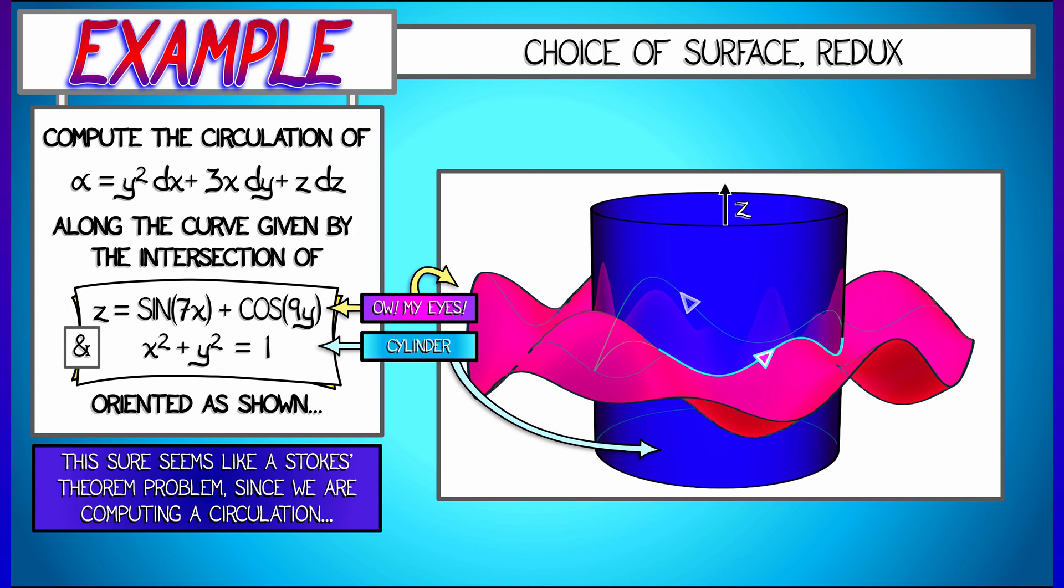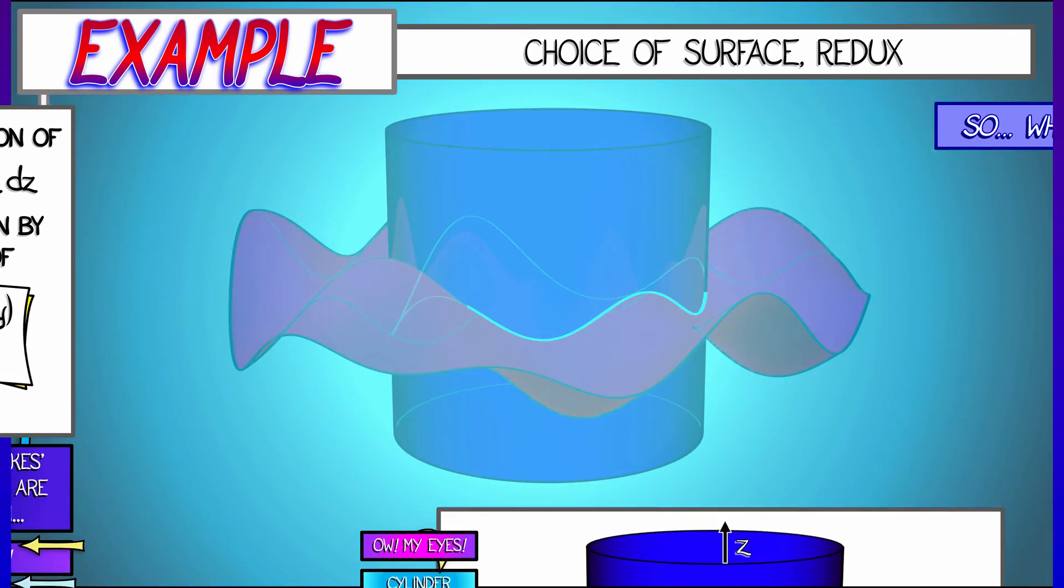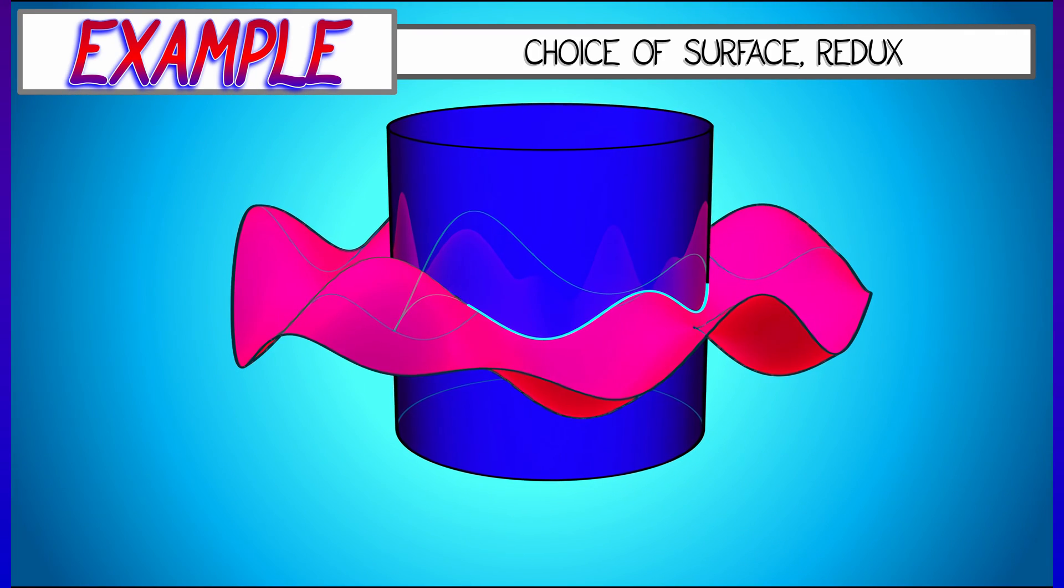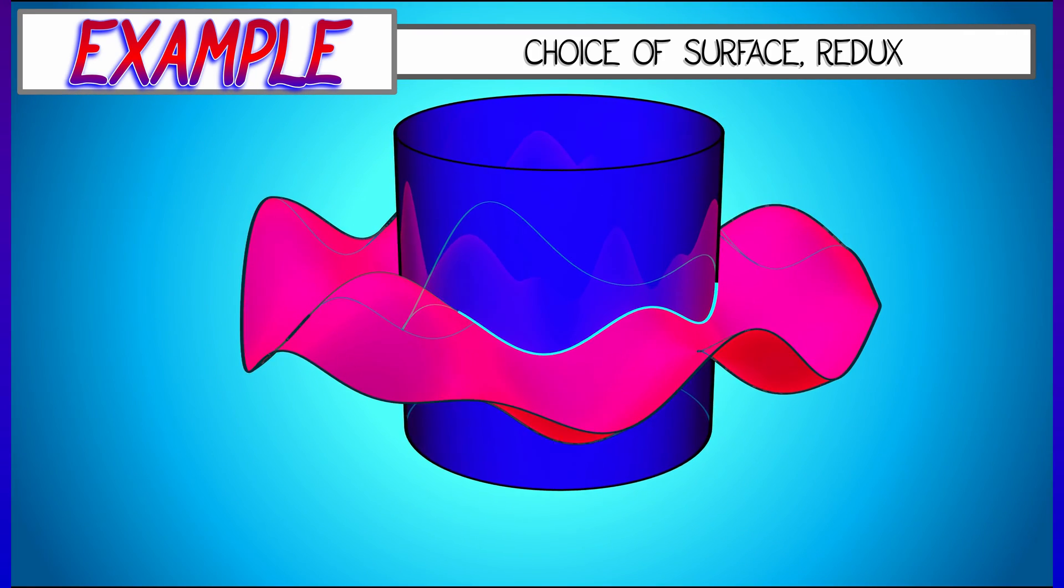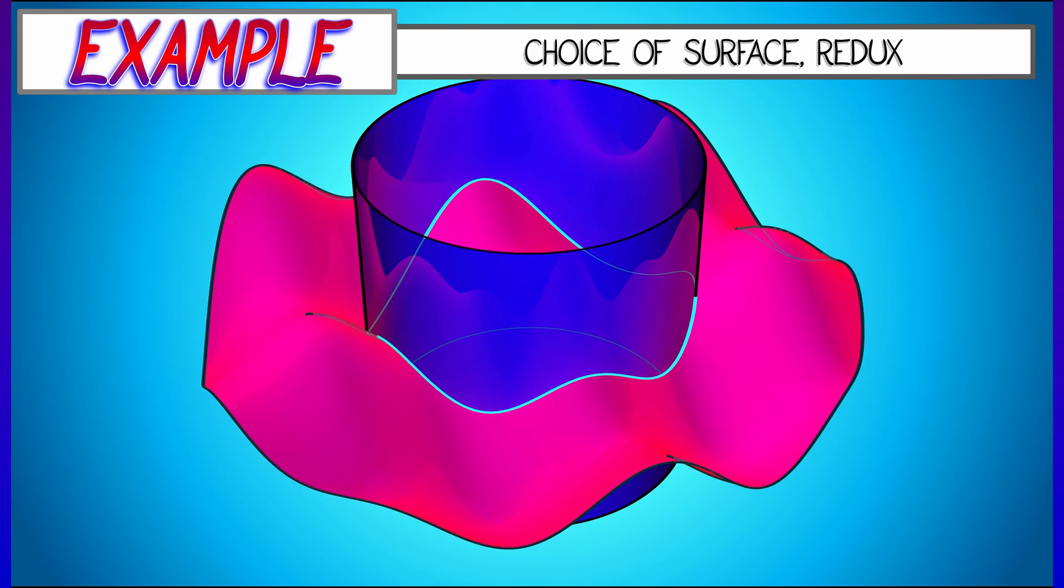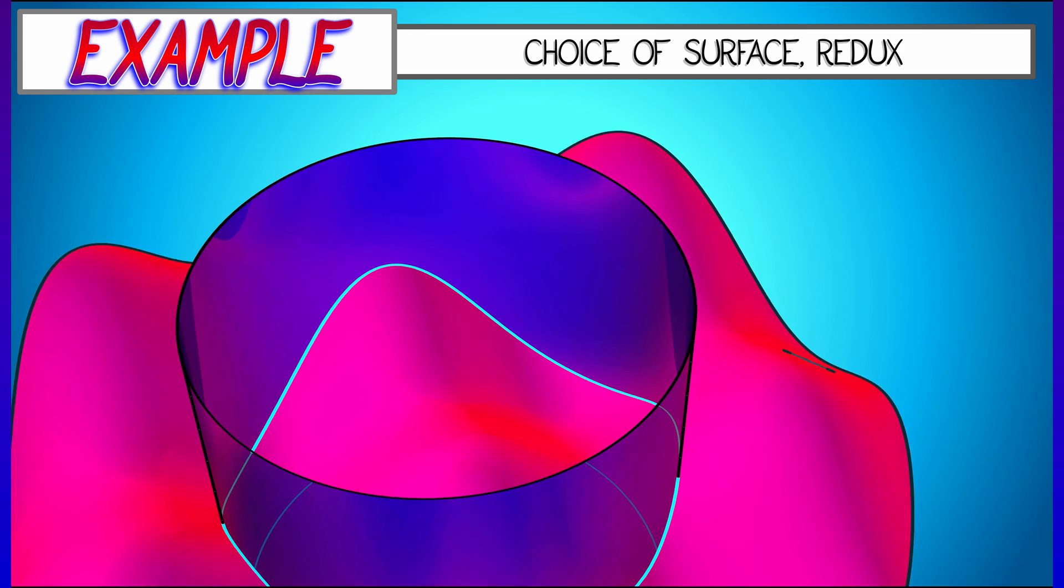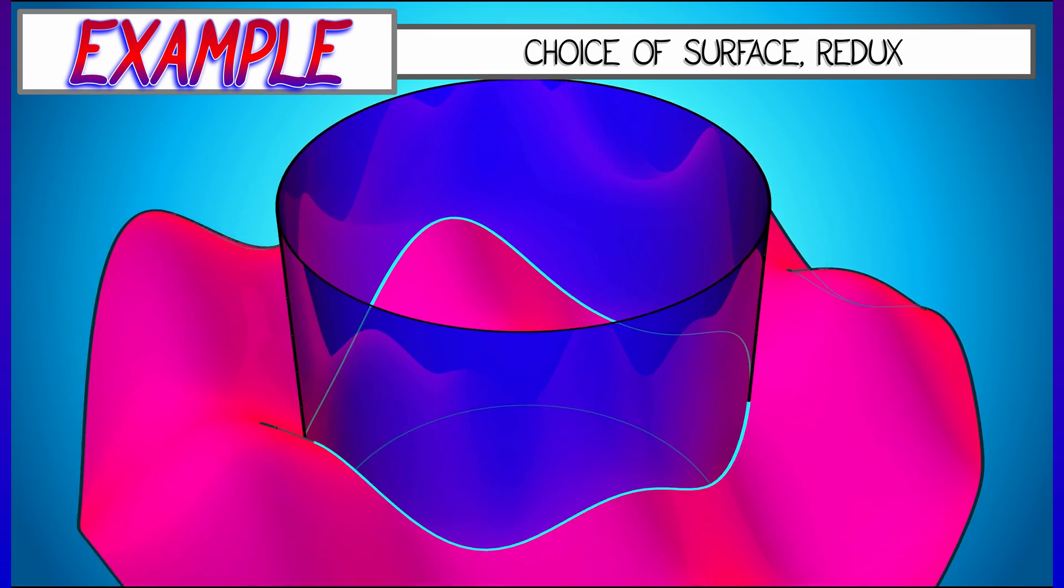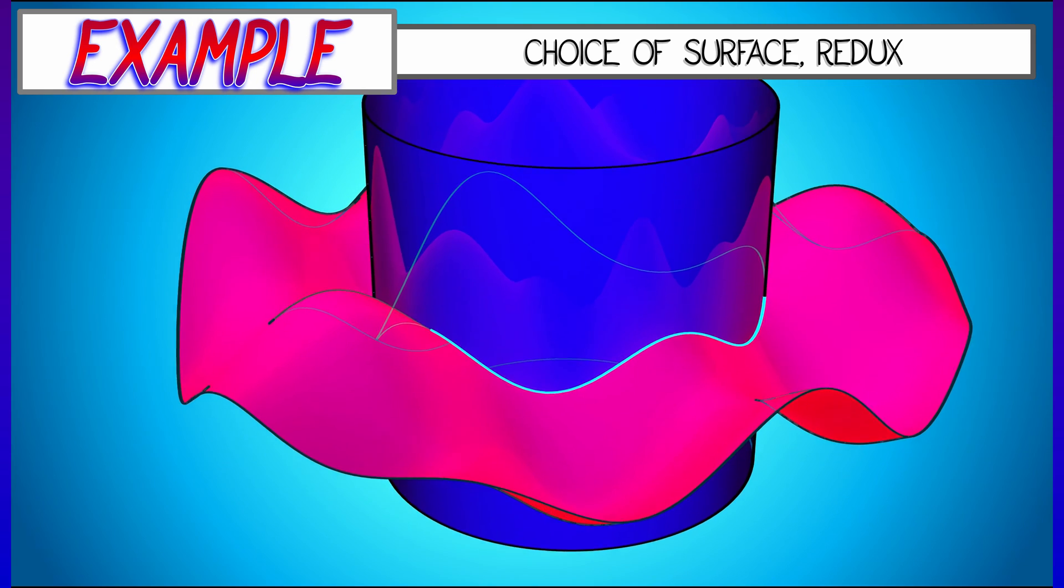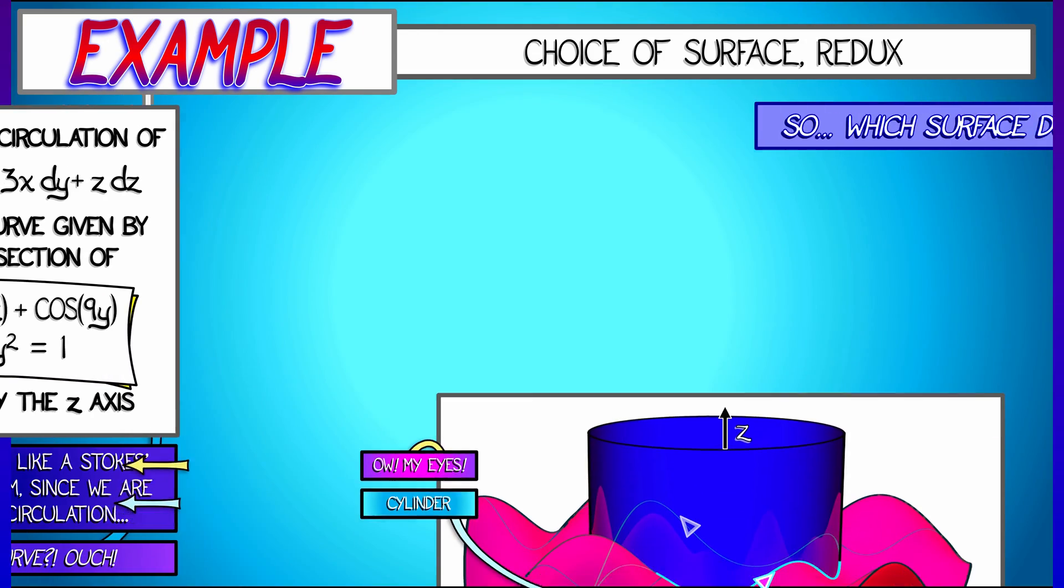The integral of this one form over a loop is the integral of its derivative over some surface that bounds that loop. So what surface do we choose? If we examine what is happening with these two surfaces, then there's a natural candidate for what bounds it, namely this wavy sort of surface, this graph of sine 7x plus cosine 9y. But that's kind of ugly. I'm not sure how I'm going to parametrize that nicely. I think it's possible, but it's going to be a mess.